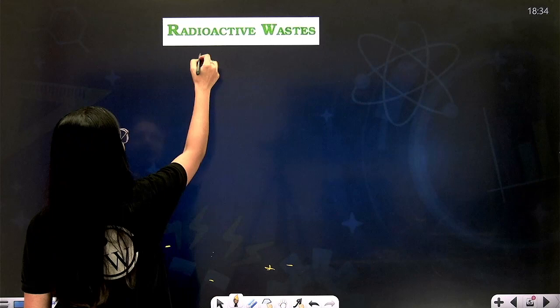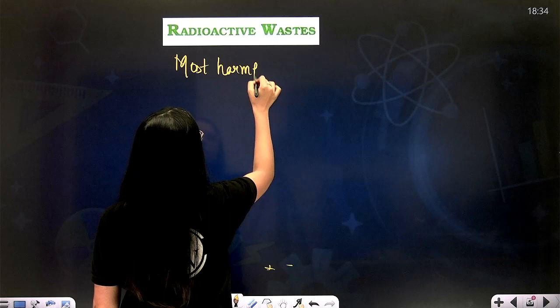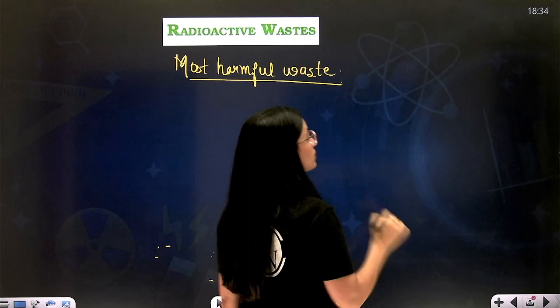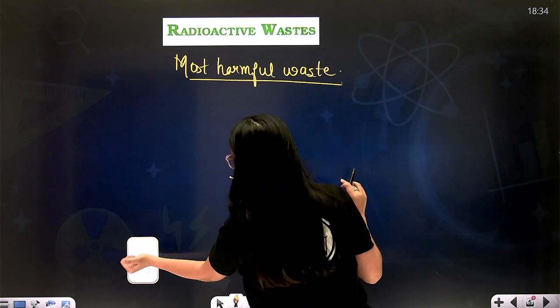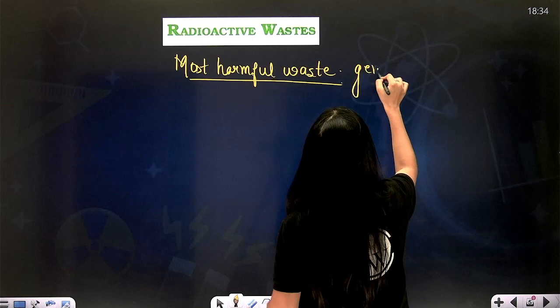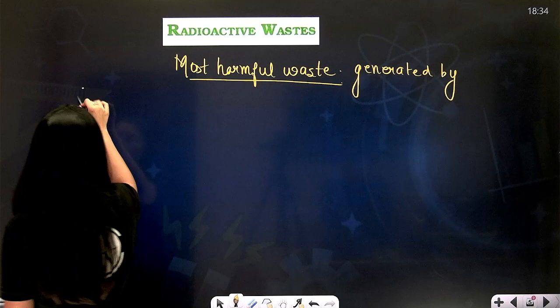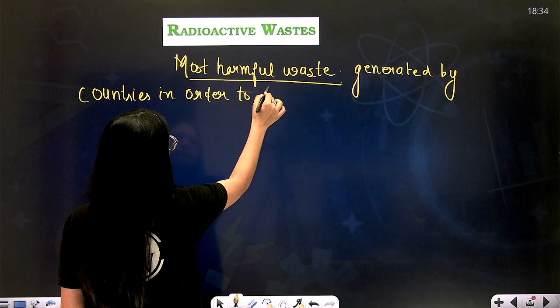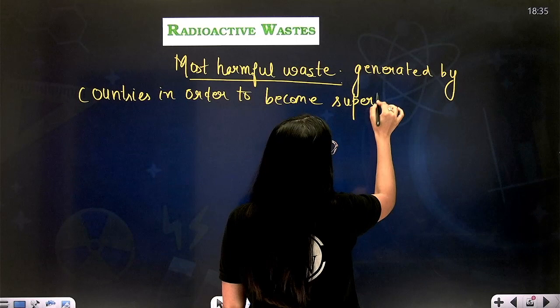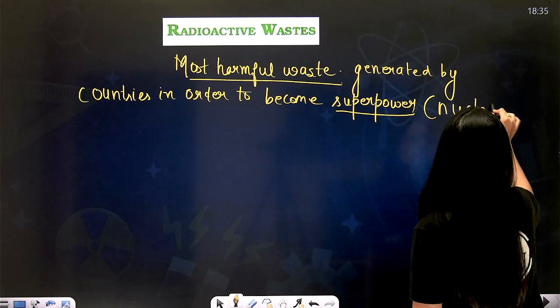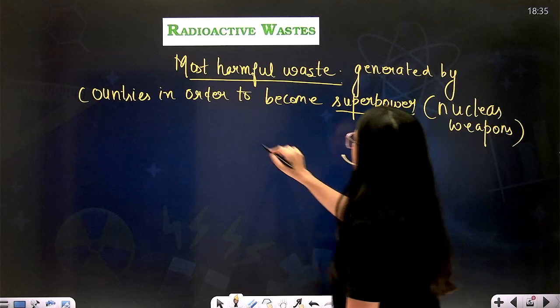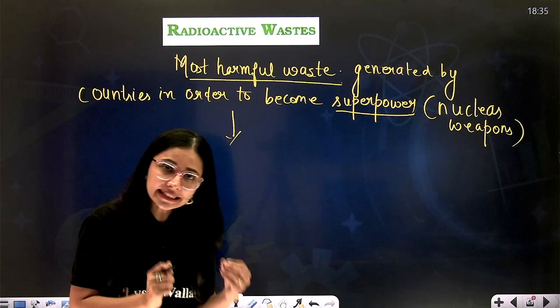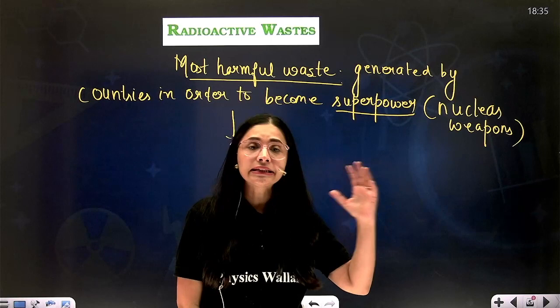Radioactive waste is the most harmful waste, generated by countries in order to become superpowers through nuclear weapons — hydrogen bombs, atom bombs. Slight negligence in nuclear power plants can lead to disaster, like the Chernobyl disaster and the Bhopal gas tragedy.